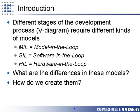During different stages of MBSD, or Model-Based Systems Design, you'll be using different models. Usually, you'll begin with a Model-in-the-Loop, or MIL, process. You then work towards Software-in-the-Loop, SIL, and eventually Hardware-in-the-Loop, HIL. So what are the differences in these models, and how do we create them?